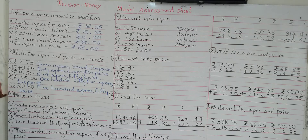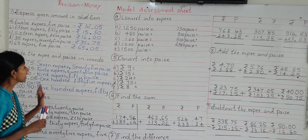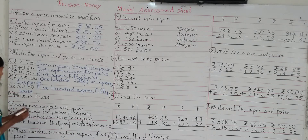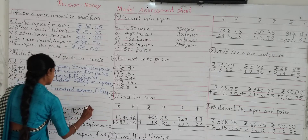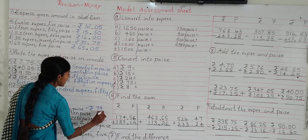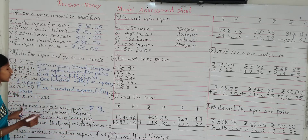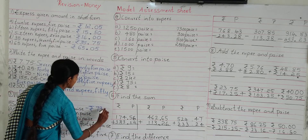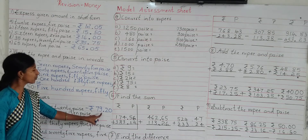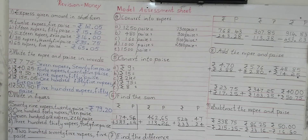Now look at question number 3: writing figures. Here they are given rupees and paisa in words and we have to write the given rupees and paisa in figures. Look at the first example: 79 rupees 25 paisa. Write the figures using the rupee symbol. How many rupees? 79 rupees.